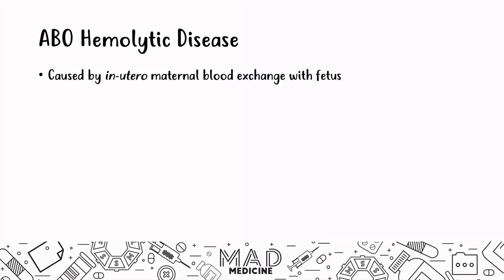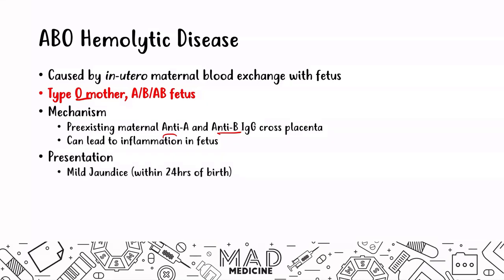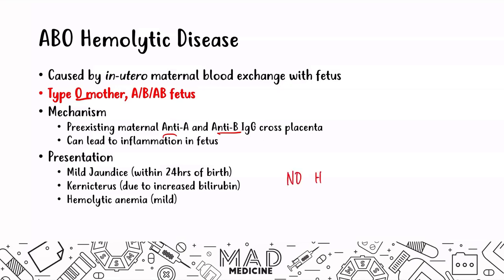When it comes to ABO hemolytic disease, it is caused by the same mechanism — in utero maternal blood exchange with the fetus. You're going to have a type O mother with a fetus who is type A, type B, or type AB. The mechanism is that the type O mother has pre-existing anti-A and anti-B IgG antibodies that cross the placenta, leading to inflammation in the fetus. Presentation includes mild jaundice within 24 hours of birth, kernicterus due to increased bilirubin from hemolysis, and mild hemolytic anemia. Importantly, hydrops fetalis does not occur.